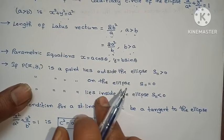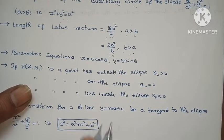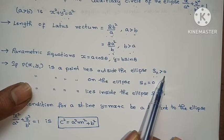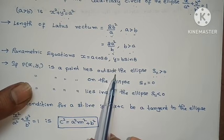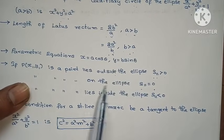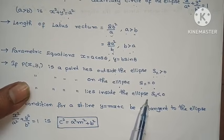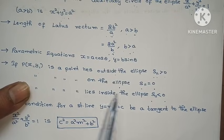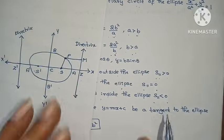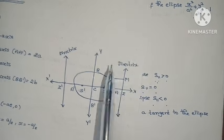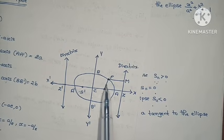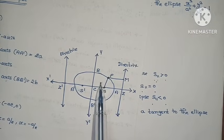To find if a point P lies inside or outside the ellipse, use S11. If S11 is greater than 0, the point P lies outside the ellipse. If S11 equals 0, the point P lies on the ellipse. If S11 is less than 0, the point P lies inside the ellipse.